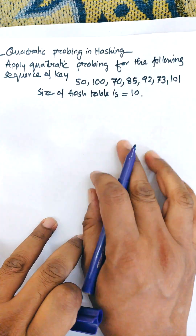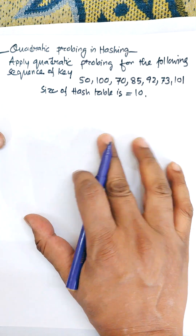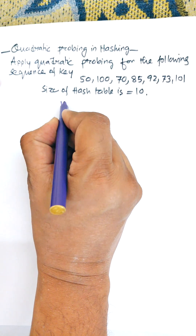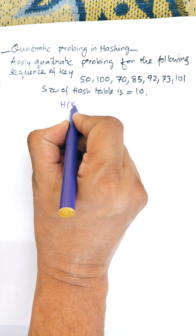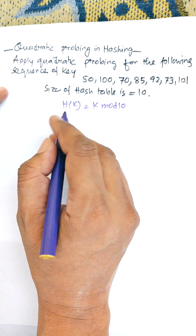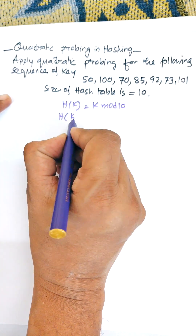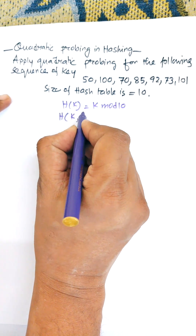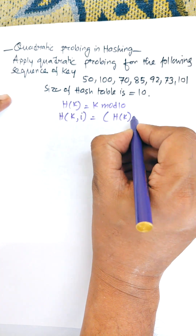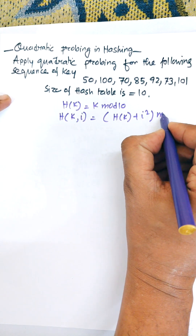In this video, I am going to apply quadratic probing for the following sequence of keys. The hash table size is 10, h(k) = k mod 10. When a collision occurs, we will check h(k, i) = h(k) + i² mod 10. This is the basic concept of quadratic probing.